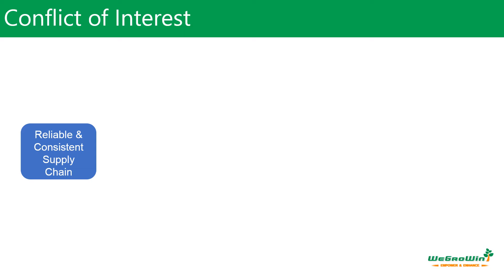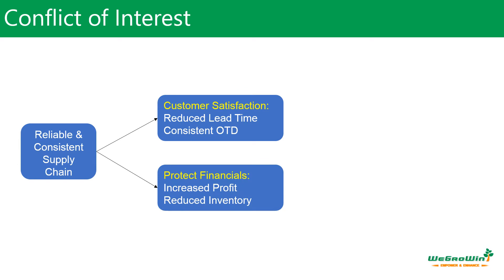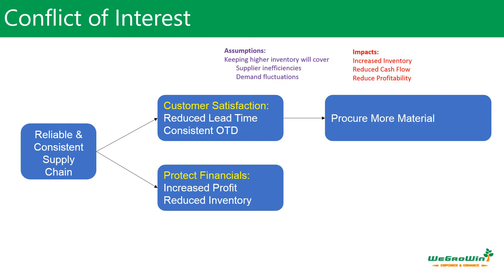We want a reliable and consistent supply chain. To achieve this we need to satisfy customers with reduced lead time and consistent on-time delivery, while also protecting the financials of the organization by improving profitability and reducing inventory. To achieve customer satisfaction, companies procure more material assuming that higher stock will cover supplier inefficiency and demand fluctuation, but this leads to increased inventory, reduced cash flow, and reduced profitability.